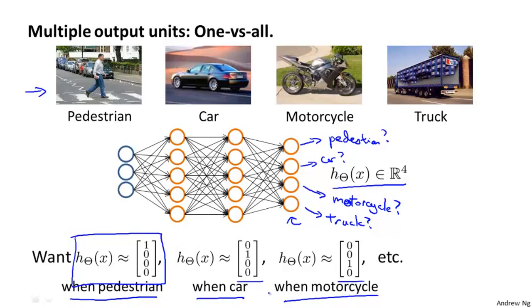So this is just like the one versus all method that we talked about when we were describing logistic regression. And here we have essentially four logistic regression classifiers, each of which is trying to recognize one of the four classes that we want to distinguish amongst.